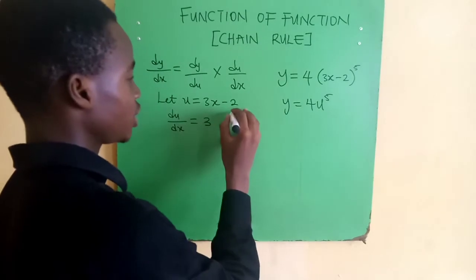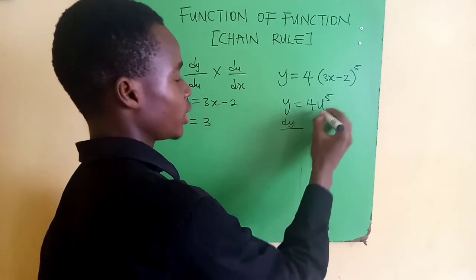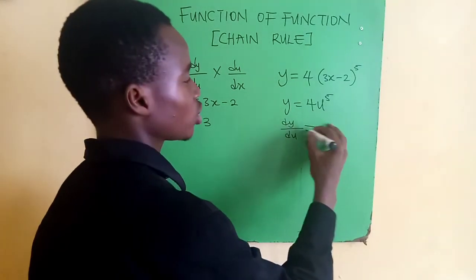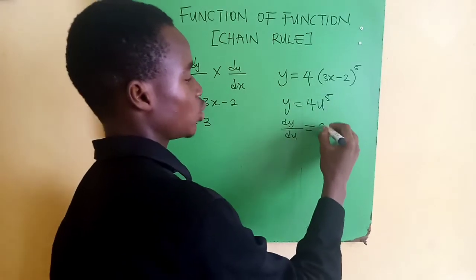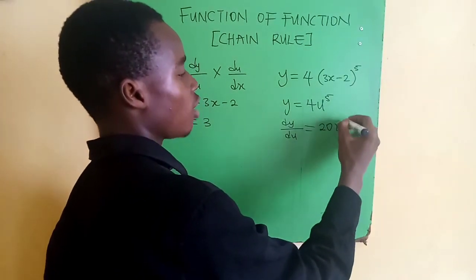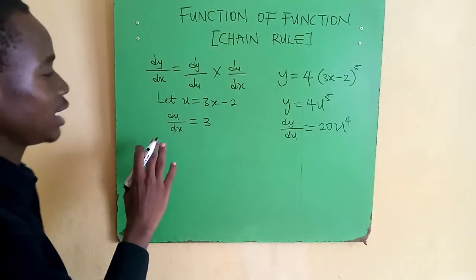Now we differentiate y with respect to u, that's dy/du. It gives us 4 times 5 = 20, and the power of u becomes 5-1 = 4, so dy/du = 20u^4. We've succeeded in getting du/dx and dy/du.